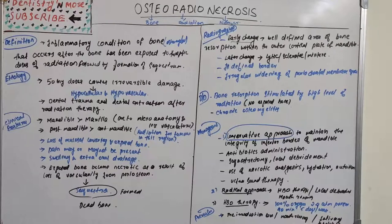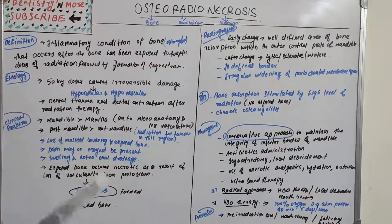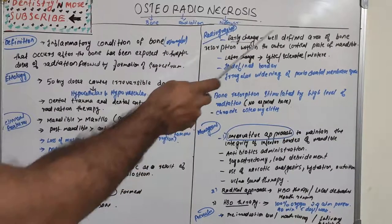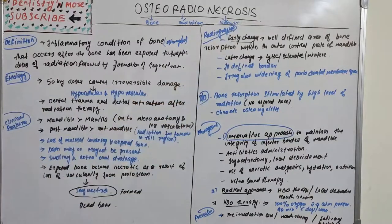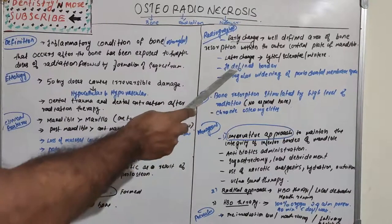The exposed bone becomes necrotic as a result of loss of vascularity from the periosteum, which results in sequestrum formation — that is, dead bone. Regarding radiographic features, there are early and later changes. In early changes, there will be a well-defined area of bone resorption within the outer cortical plate of the mandible.